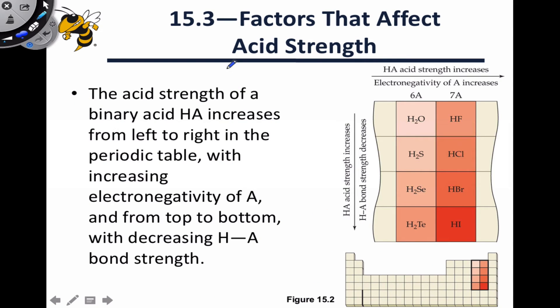You can summarize these ideas by looking at the periodic trends. As we move from left to right across the periodic table for binary acids, acid strength increases. This is because the electronegativity of the A atom increases as we move from left to right, and this is a trend that we've seen before. As we move down the periodic table, acid strength also increases, and we can ultimately trace this back to a weakening of the HA bond. The HA bond strength or the bond enthalpy decreases as we move down the periodic table. That means acids near the bottom are going to be the strongest, at least within a group.